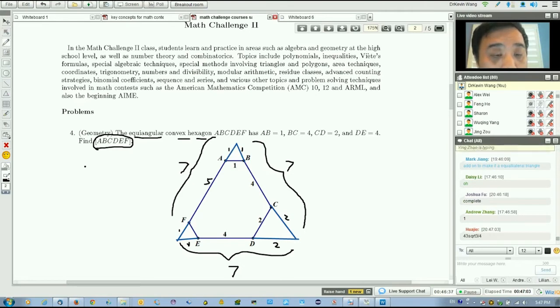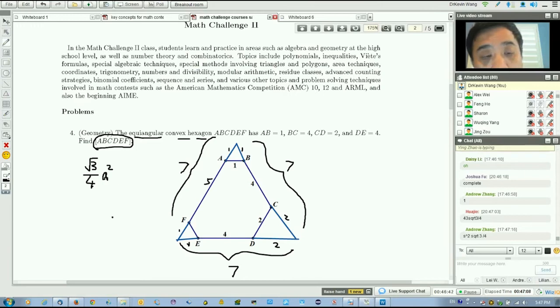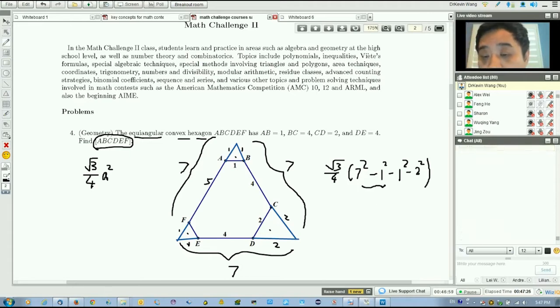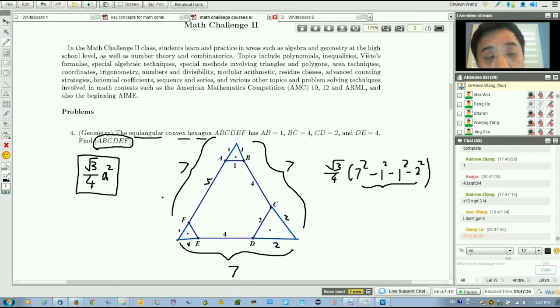The whole area is the entire equilateral triangle using the formula: square root of 3 over 4 times a squared. In this case, square root of 3 over 4 times 7 squared, minus the three small equilateral triangles: 1 squared minus another 1 squared minus 2 squared. This gives 43 square root of 3 over 4.